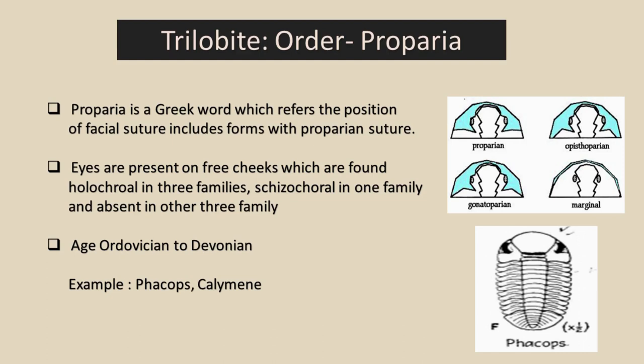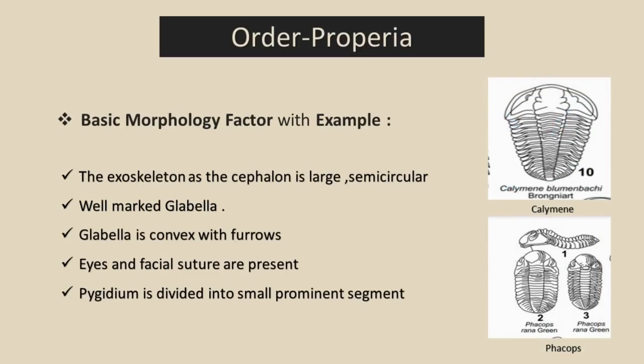Proparia appeared in the Ordovician and went extinct in the Devonian. I give two examples of Proparia: one is Phacops and the other is Calymen. In this slide I will show you the basic morphology of Phacops and Calymen, as both belong to Order Proparia.